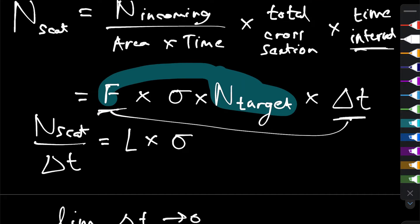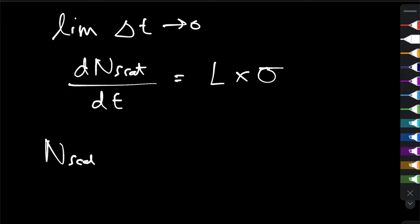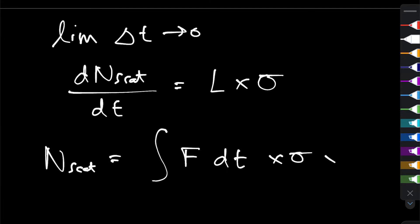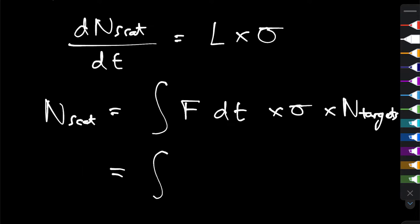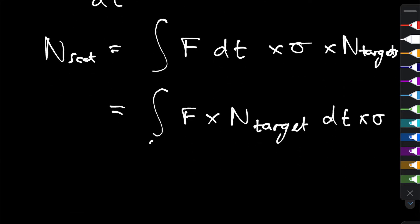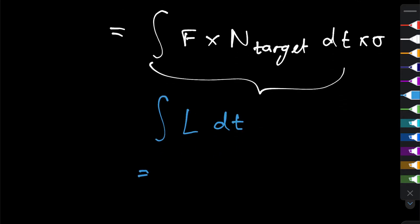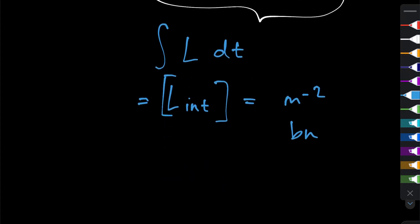So in that case we could instead work out the number of scattered particles as the time integral of flux multiplied by sigma number of targets, and sometimes we like to squeeze in that number of targets constant into the integral as well. So we get f times the number of targets integrated with respect to time times sigma and this term over here is just the integral of luminosity with respect to time and sometimes we like to call that the integrated luminosity or the cumulative luminosity over time and that's measured in units of just area so meter per second or just in barn because the time factor disappears because we're integrating over time and that's luminosity.